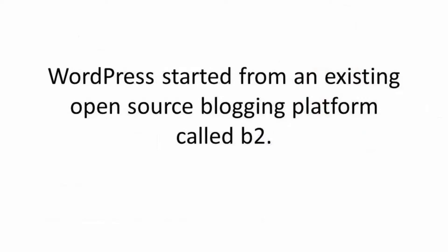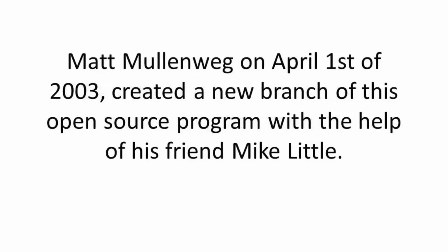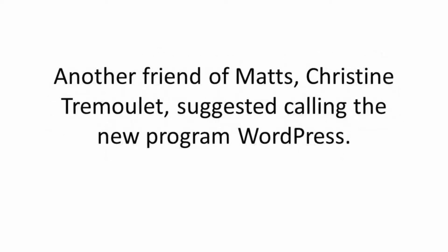WordPress started from an existing open source blogging platform called B2. When the creator of B2 was unable to support the program anymore, Matt Mullenweg in April of 2003 created a new branch of this open source program with the help of his friend Mike Little. Another friend of Matt's, Christine Tremulay, suggested calling the new program WordPress.